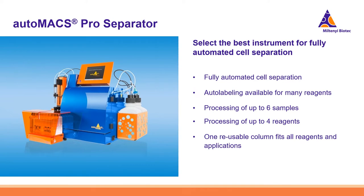The second instrument is the autoMACS Pro Separator, which performs fully automated cell separation — including auto-labeling, adding microbeads to samples, and then separating after incubation. Up to six samples can be separated in one run. Notably, this instrument uses a reusable column that can be used for up to two weeks, which is of interest for users who perform many cell separations.